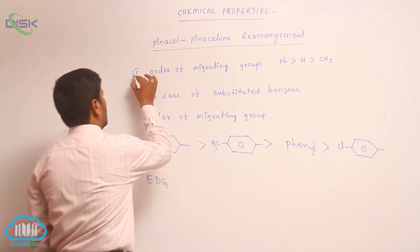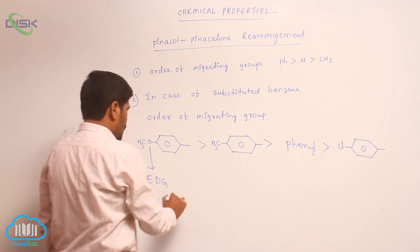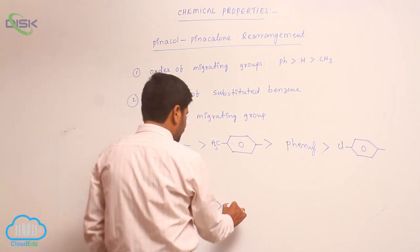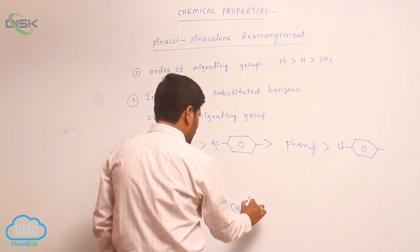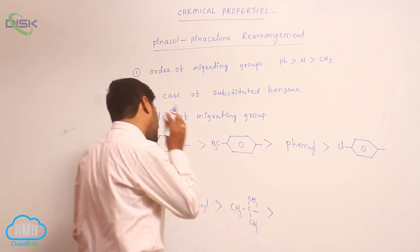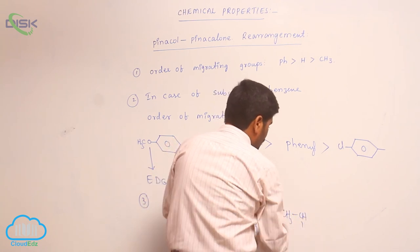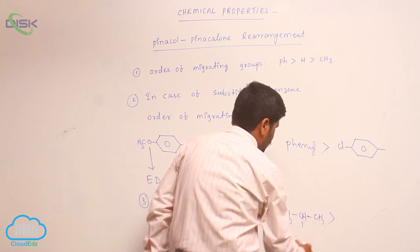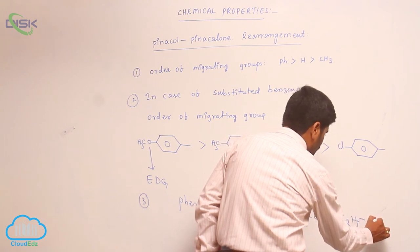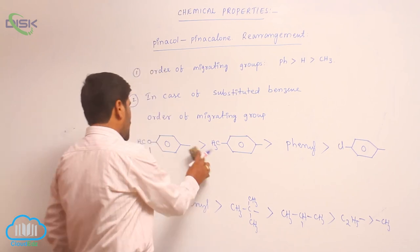This is the third order of migrating groups: phenyl migrates more readily than tertiary butyl group, which is greater than secondary butyl (secondary propyl), which is greater than ethyl (C₂H₅), which is greater than methyl. This is the complete order of migrating groups in the Pinacol-Pinacolone rearrangement.